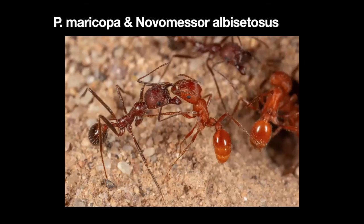Ants are famous for fighting — they're very territorial. Here we have Pogonomyrmex maricopa and Novomessor. They are territorial, but they only seem to fight to a degree and usually get along fairly well if you really watch them. But what ants are truly famous for when it comes to fighting is when they interact with their own species — then they will just slaughter each other, most species.